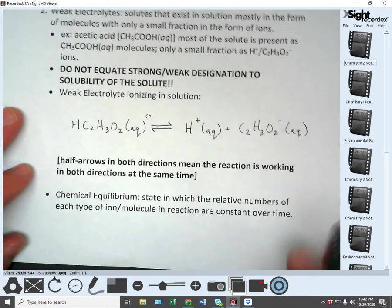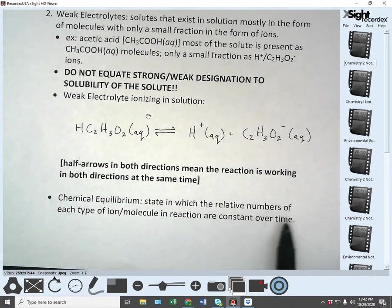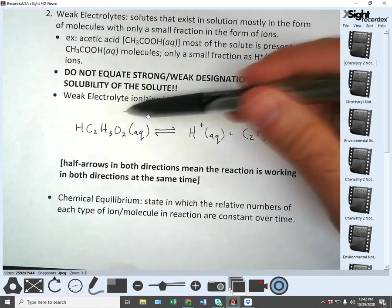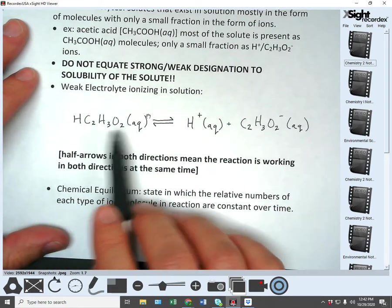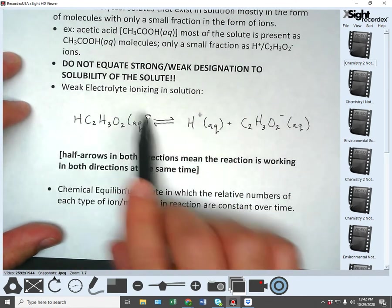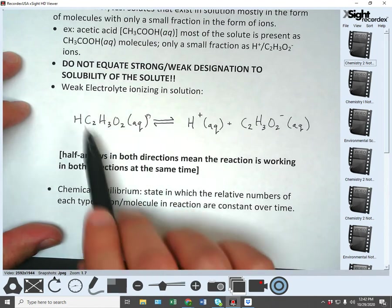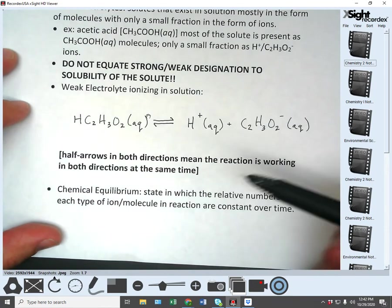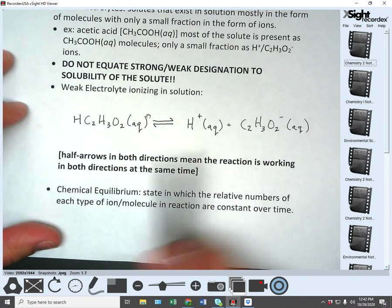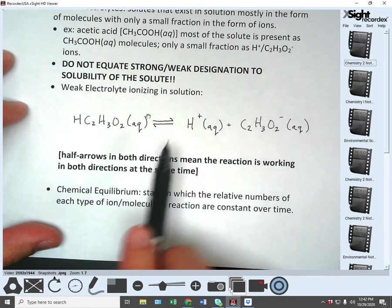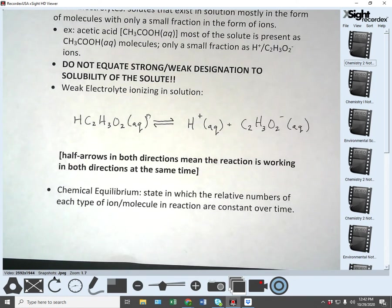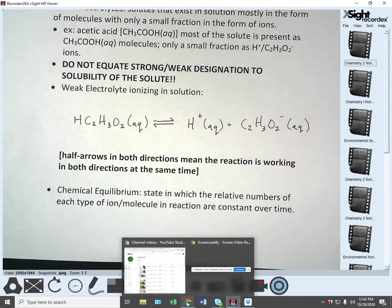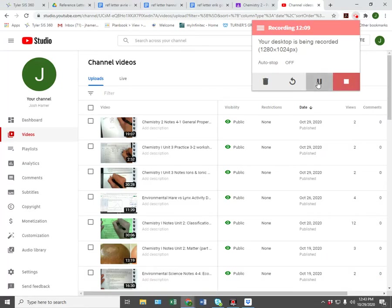So the last part of this, these notes are chemical equilibrium. The state in which the relative numbers of each type of ion or molecule in reaction are constant over time. Over time, the weak electrolyte will reach an equilibrium where you have a consistent number of molecules and ions. Not the same, but it's pretty consistent because as the molecules turn into ions, then as you get more ions, some of the ions come together and form molecules to keep that balance. It doesn't mean they're equal. It just means that there's about a ratio that is maintained in an equilibrium. So that is it for this set of notes. As usual, if you have questions, let me know.